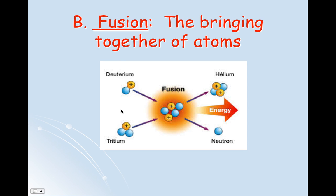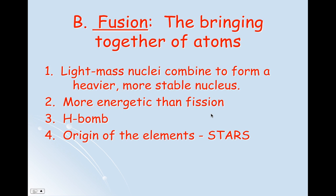Fusion in its most rudimentary form occurs between two different hydrogen isotopes — H-2 and H-3. Under very extreme conditions of lots of pressure and temperature, you can force these two nuclei together. They would normally repel because of their two positive repulsive forces, but if they gain enough energy, you can force them together. When they fuse, a helium nucleus is emitted — slightly heavier than what we started with — along with a neutron and a tremendous amount of energy. Our light mass nuclei combine to form a heavier, more stable nucleus. This is much more energetic than fission, and it's what we use in the hydrogen bomb, the H-bomb.